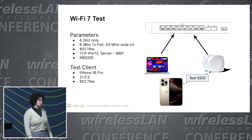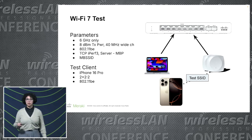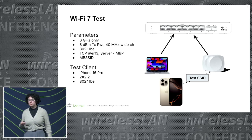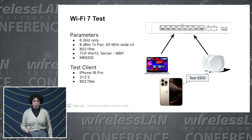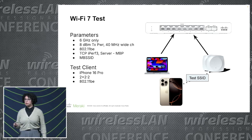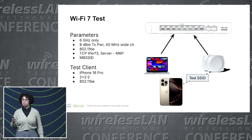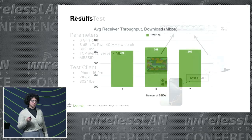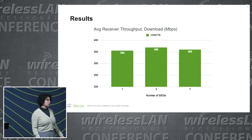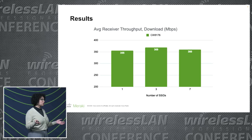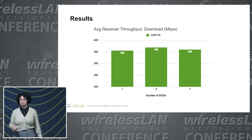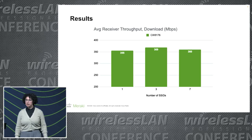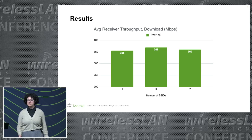I then did a second test with multiple BSSID enabled using a Wi-Fi 7 client, switching between my iPhone and MacBook for the iPerf test. In this case, we don't see quite as much of a difference — there are small fluctuations due to negotiated data rates, but generally it fared a lot better than without multiple BSSID.